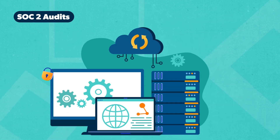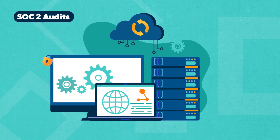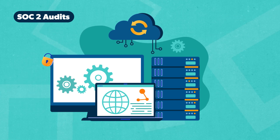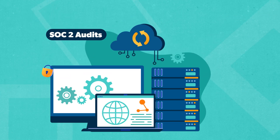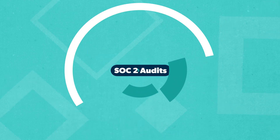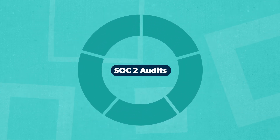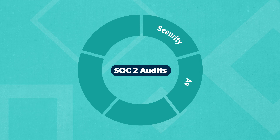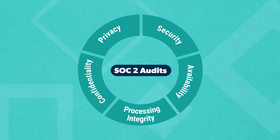As you can imagine, SOC 2 is a must-have for most cloud-based software systems. SOC 2 audits assess controls based on five trust service categories: security, availability, processing integrity, confidentiality, and privacy.